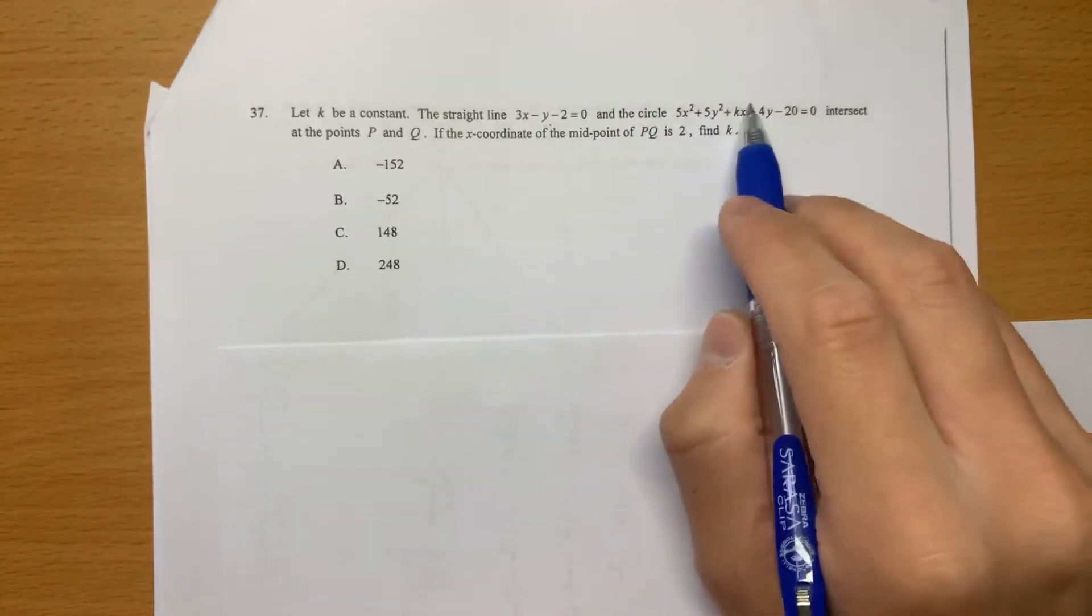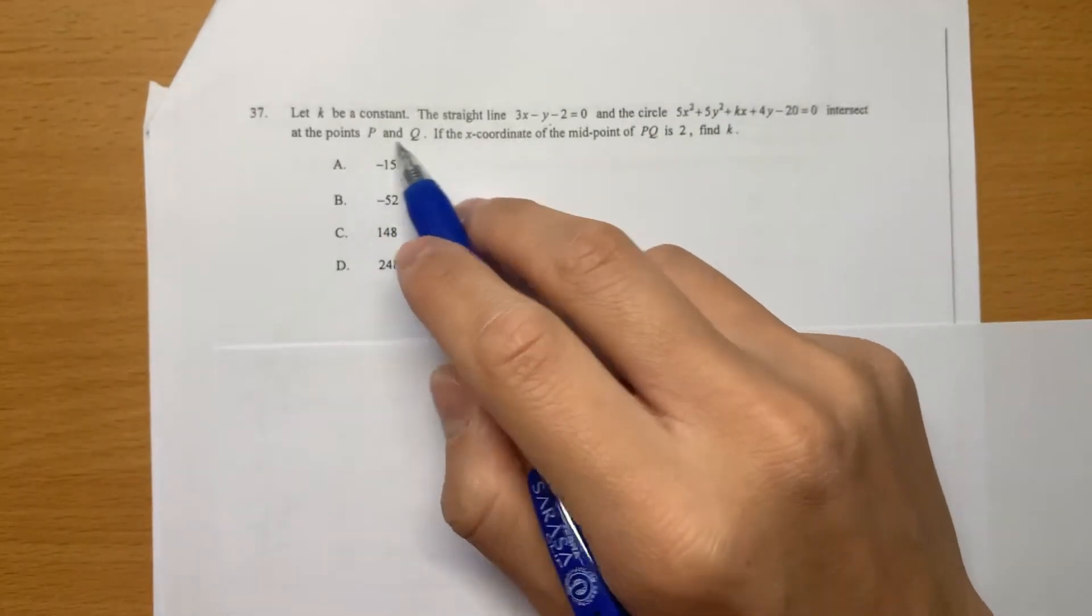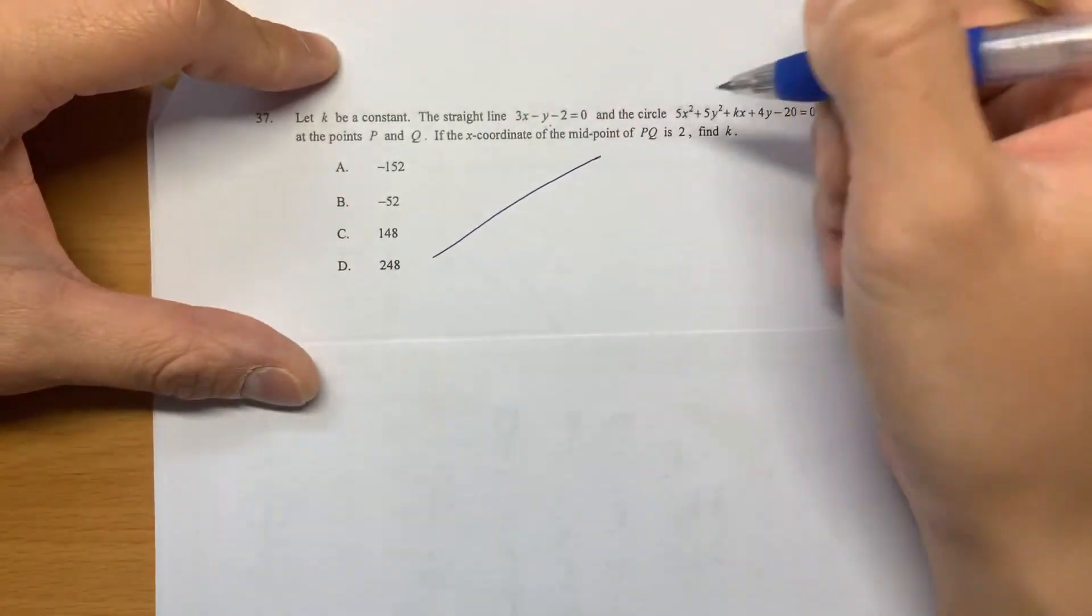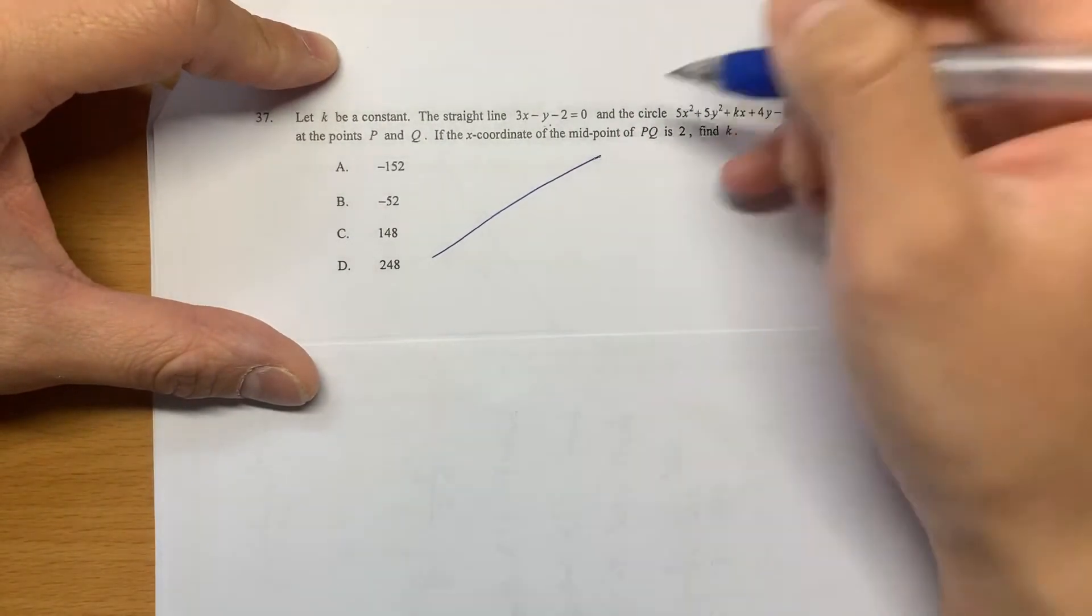And there is a circle. Intercept at two points. You already know that there is an intercept. So there is a straight line. I'm not sure whether it looks like this. I just simply draw it.